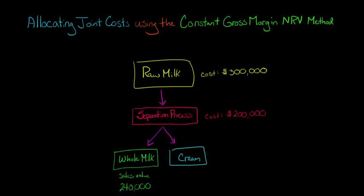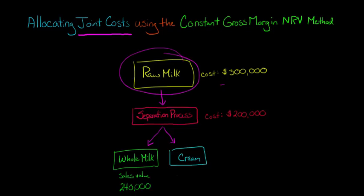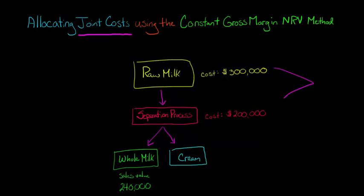In this video, we're going to talk about how to allocate joint costs to products by using the constant gross margin net realizable value method. Let's take an example where we run a dairy farm that produces raw milk at a cost of $300,000, and then we have a separating process that runs costs of $200,000. These are our joint costs, and we need to allocate these joint costs to our products.